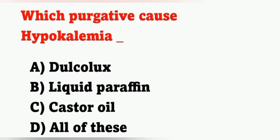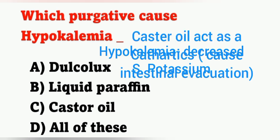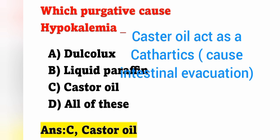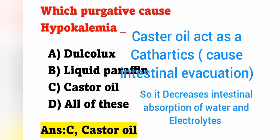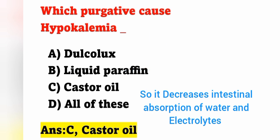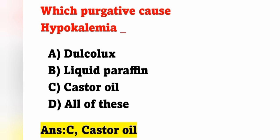Next question: which purgative causes hypokalemia? Option A: Antalcolex. Option B: liquid paraffin. Option C: castor oil. Option D: all of these. Hypokalemia means decreased serum potassium level. The correct answer is Option C: castor oil. Castor oil acts as a cathartic, meaning it causes intestinal evacuation of undigested food and waste material through feces. It decreases intestinal absorption of water and electrolytes, thereby causing a chance of hypokalemia.